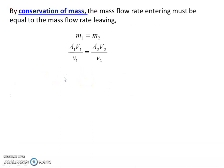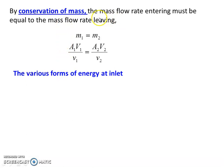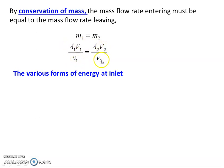First, conservation of mass: the mass flow rate entering equals the mass flow rate leaving the system, so M1 equal to M2. M1 is A1 times V1 divided by small V1. A1 is area, capital V1 is velocity, small V1 is specific volume. So A1 V1 divided by small V1 equal to A2 V2 divided by small V2. This is the conservation of mass, also known as the continuity equation.